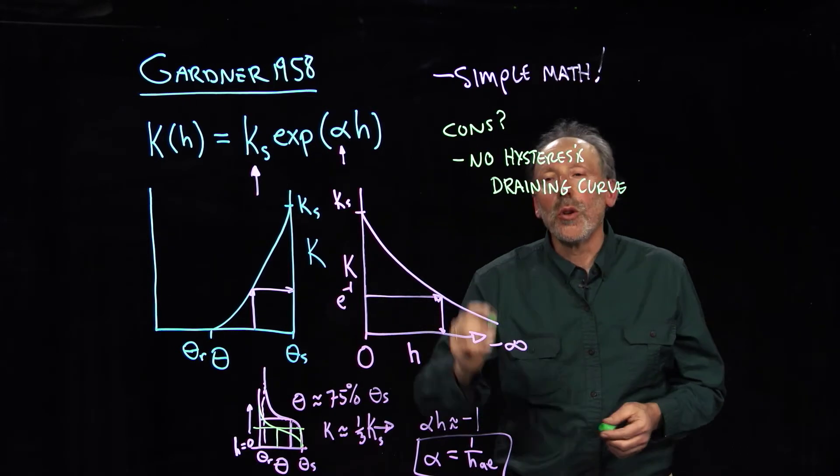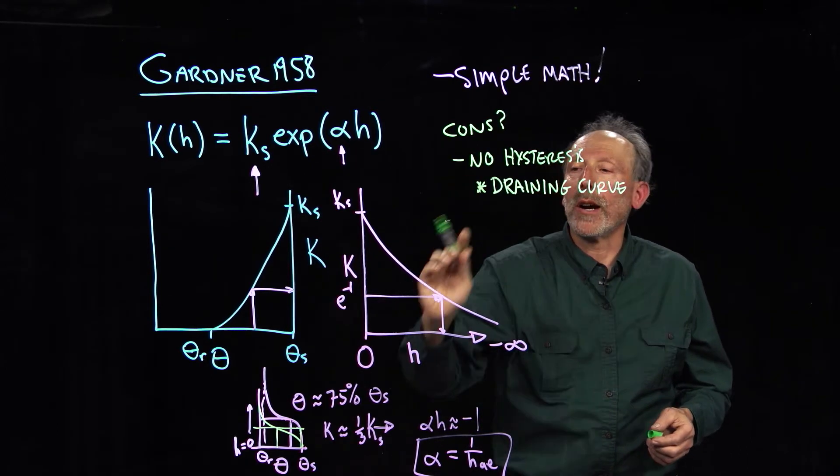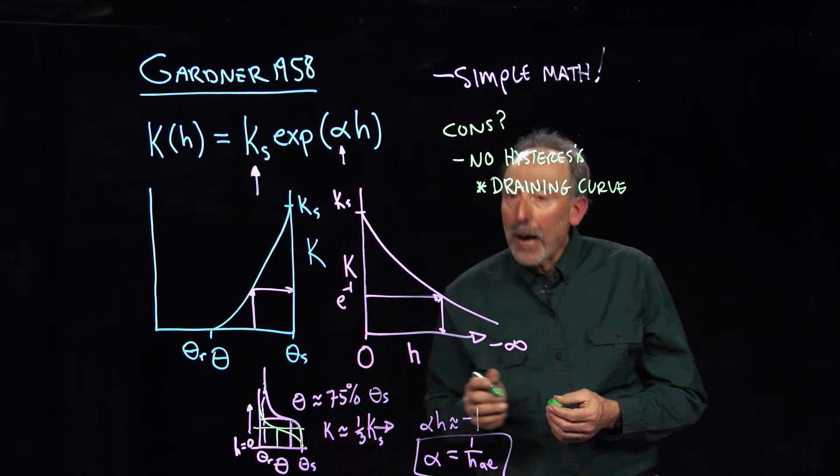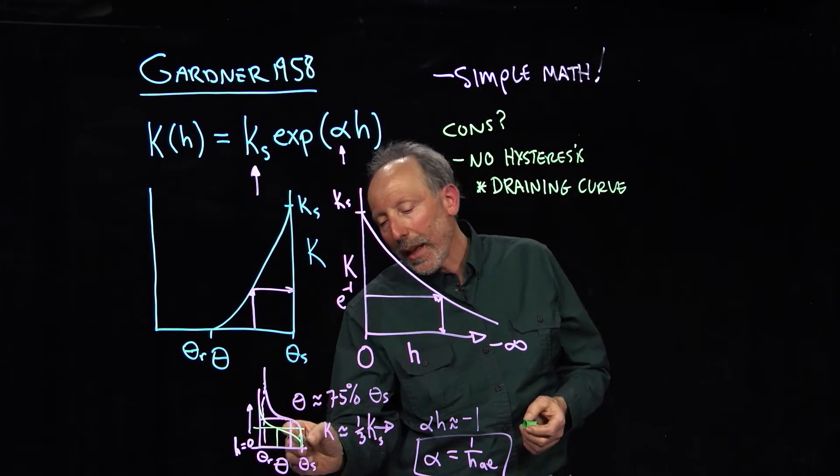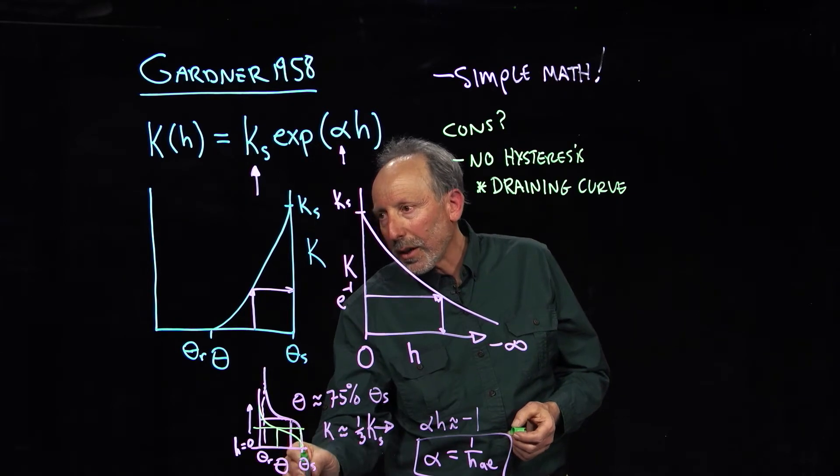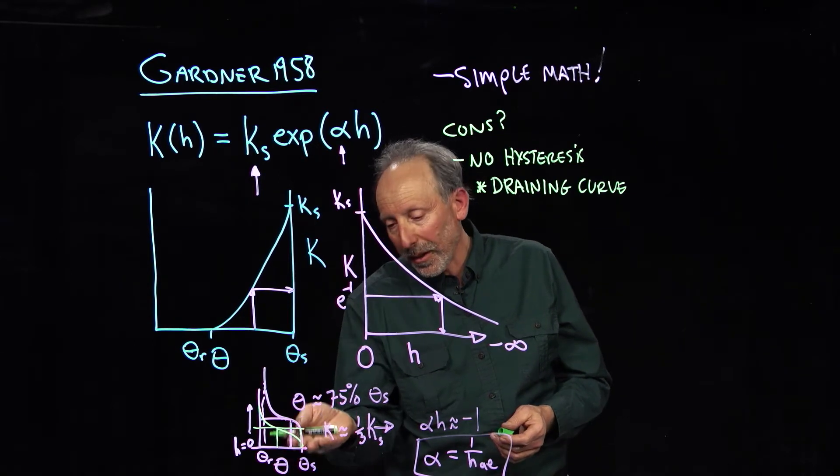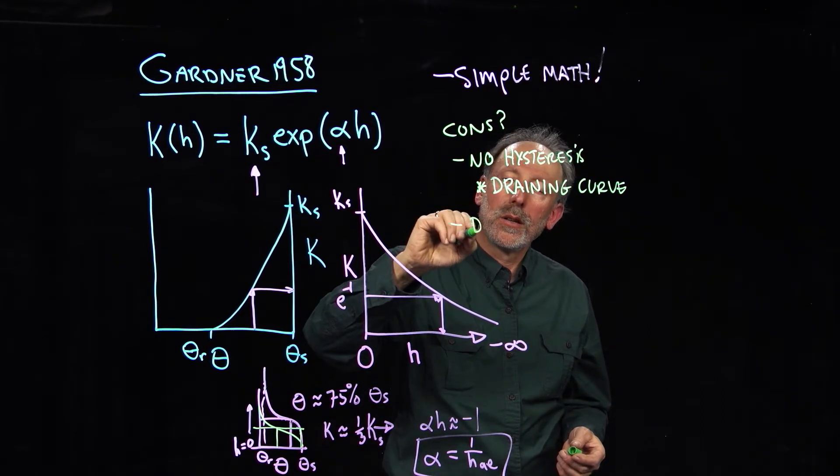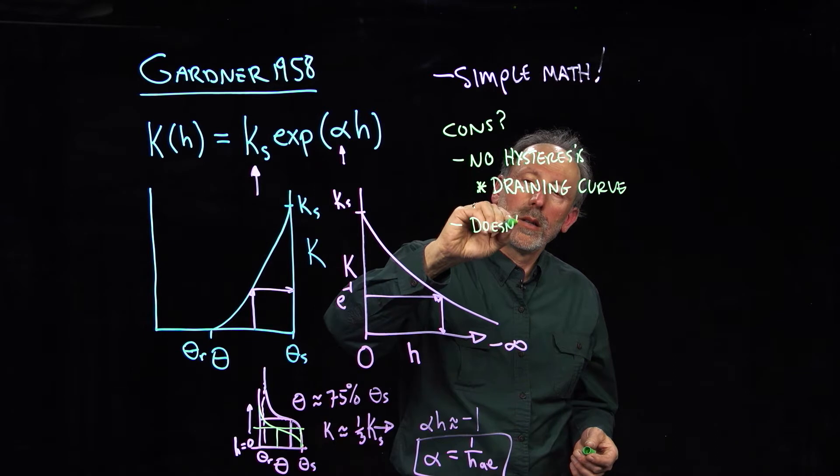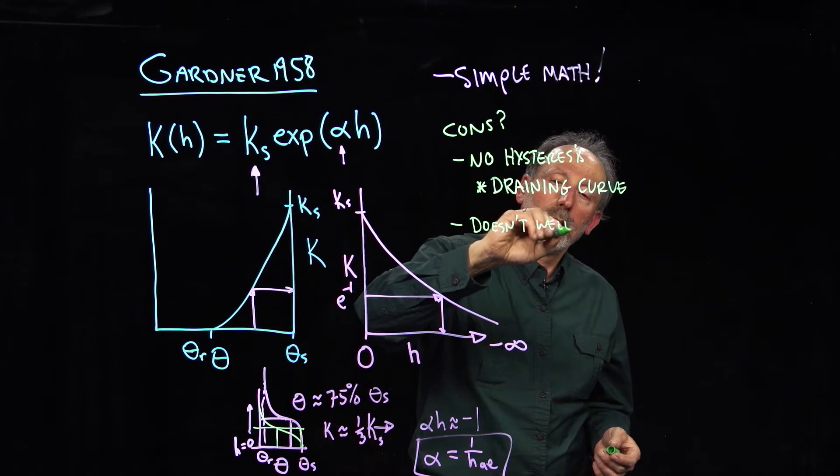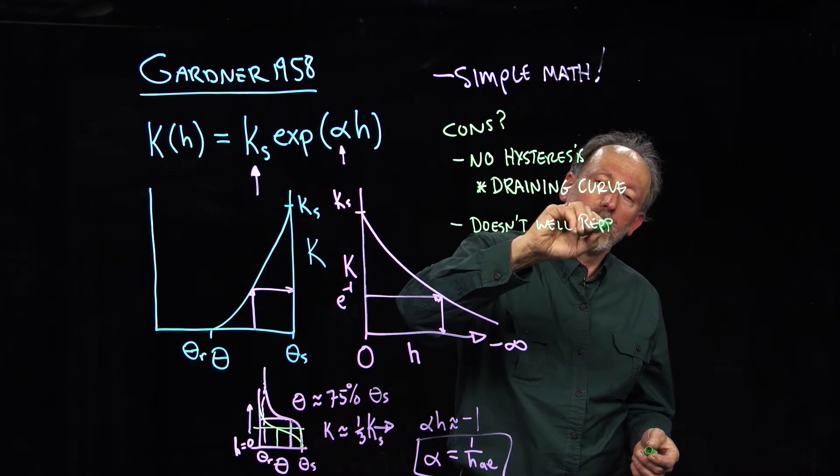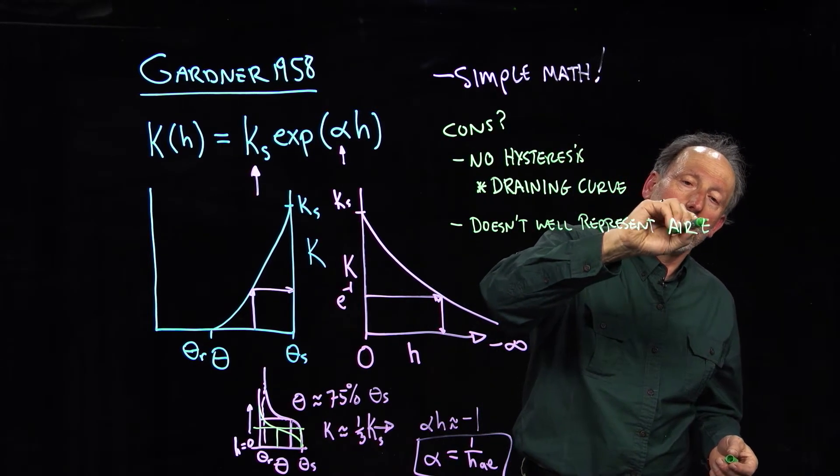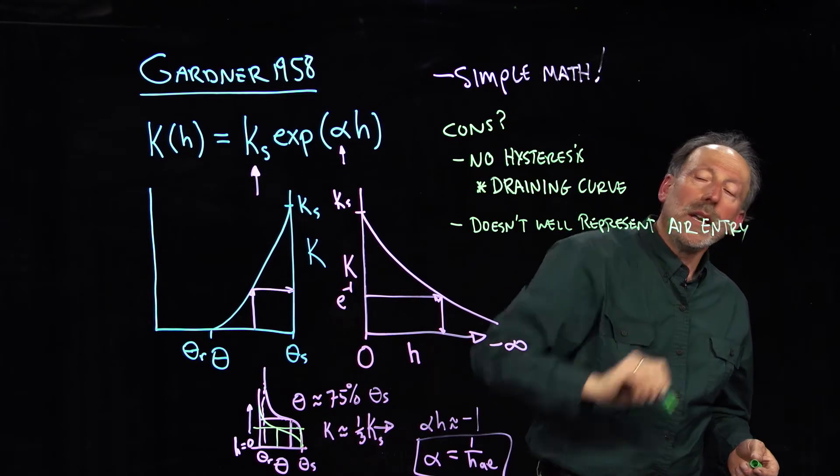So you only want to use this expression on one curve. So we don't have hysteresis. And the other thing is that we know that when this water content stays fairly constant for some set of pressures, so it doesn't well represent the air entry pressure.